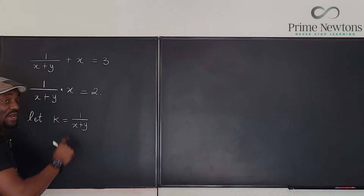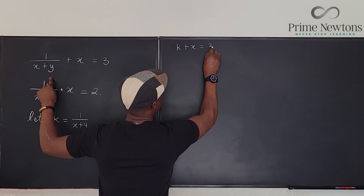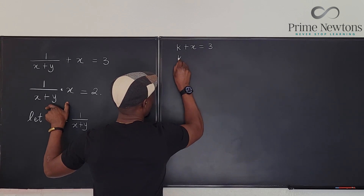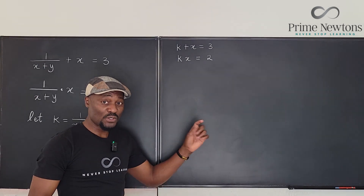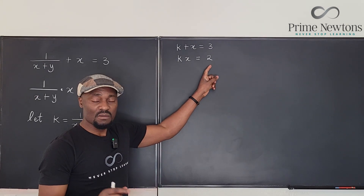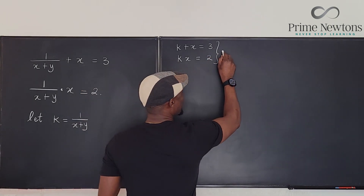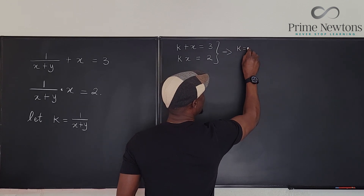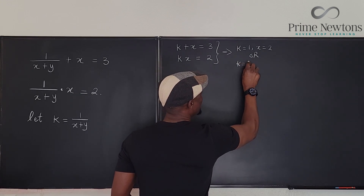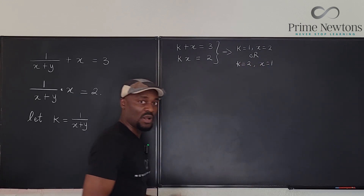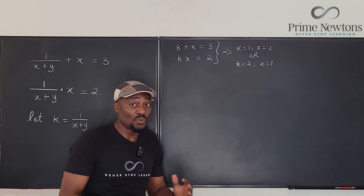So the two equations become k plus x equals three, and kx equals two. Remember the whole idea of factoring: what two numbers multiply to give two but add to give three? Clearly this implies k equals one and x equals two, or k equals two and x equals one. Based on this arrangement we can go back and find which one works.